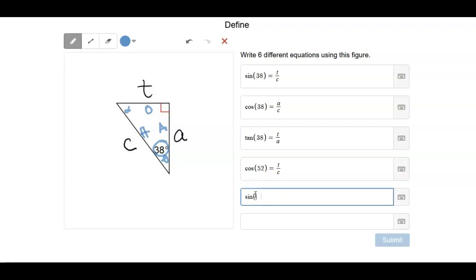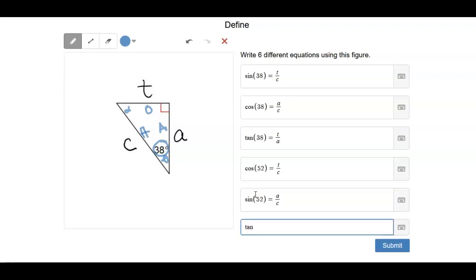We could do the sine of 52 is equal to a over c. We can do the tangent of 52 is equal to a over t. Some other ones that you could do would be the Pythagorean theorem, so a squared plus